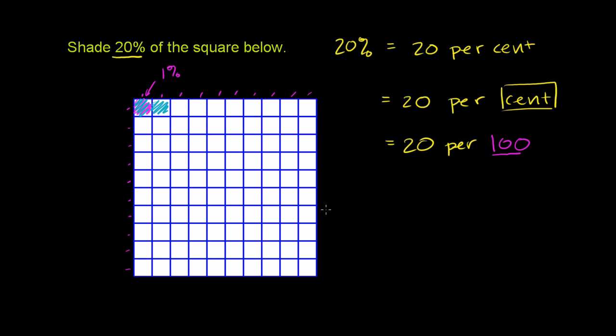It's literally 2 per 100, where 100 would be the entire square. So if we wanted to do 20, we'd do 1, 2, 3, 4... Actually, if we shade this entire row, that will be 10%: 1, 2, 3, 4, 5, 6, 7, 8, 9, 10.